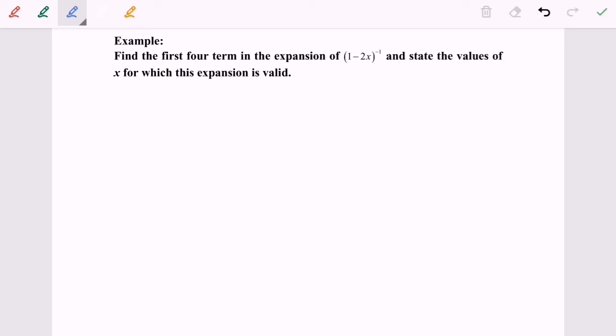Hello everyone, so today I'm going to discuss the example for the binomial expansion where n is a negative integer. Find the first four terms in the expansion and state the value of x for which this expansion is valid.